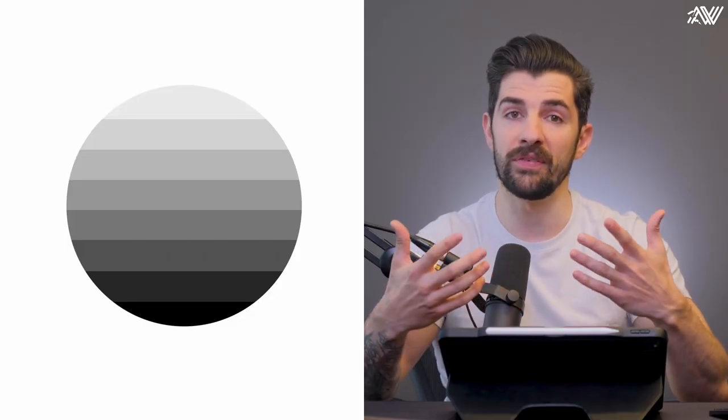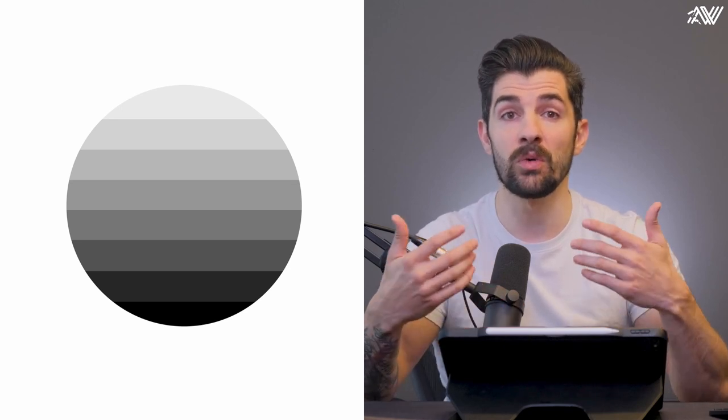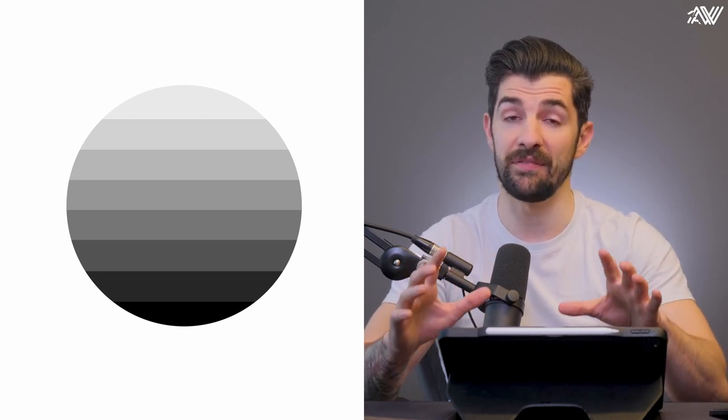First up is value. The local value of an object will affect how light interacts with it. Darker values will absorb more light and lighter values will absorb less. Keep in mind that different colors have different value ranges and different colors will also affect the light differently.